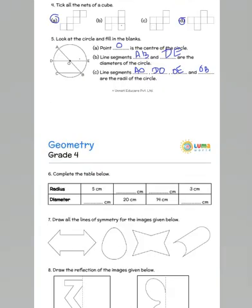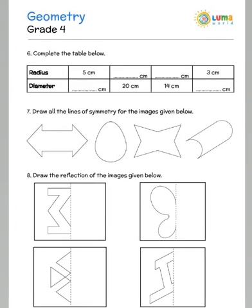Let us now look at the next question which goes on to say complete the table where the radius is given and the diameter is asked. Diameter is double the radius, so 5 becomes 10. 20 is the diameter and radius would be half of it, which means this is 10. 14 is the diameter and the radius is 7. Radius is 3 here and the diameter would be 6.